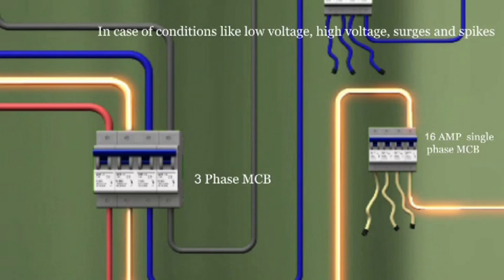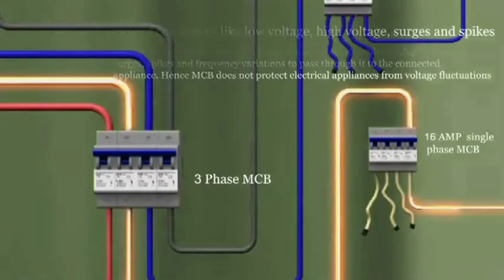When there is low voltage, high voltage, surges, or spikes, our MCB fails to detect such fluctuations. It allows the frequency variations to pass through to the connected electrical appliance, and protection of appliances from voltage fluctuations is nowhere on the scene.